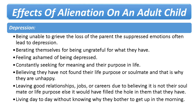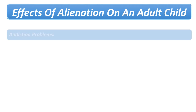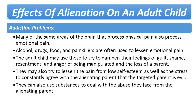Many find relief and happiness when they reconcile with the alienated parent or start therapy. Many of the same areas of the brain that process physical pain also process emotional pain. Alcohol, drugs, food, and painkillers can lessen emotional pain, leading people to abuse substances in an attempt to dampen feelings of guilt, shame, resentment, and anger from being manipulated and losing a parent. They may also use substances to cope with low self-esteem, the pressure to agree that the targeted parent is evil, or abuse faced from the alienating parent when they show love towards the targeted parent.